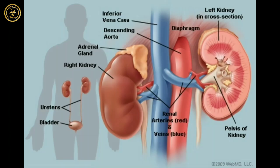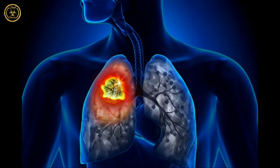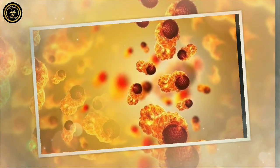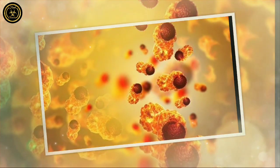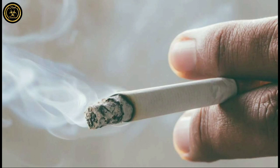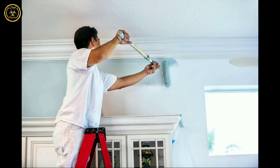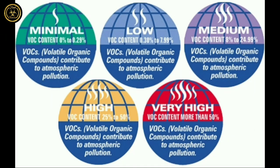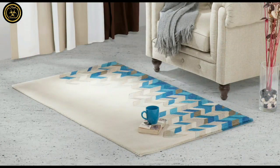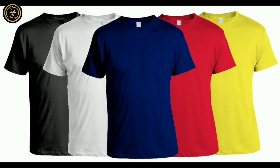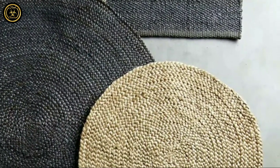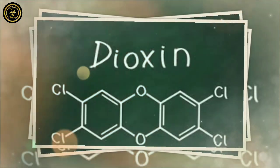VOC exposure can cause kidney failure and liver cancer. They are found in paint, glue, furniture, and wax — classified as low volatile compounds. These chemicals can be present in carpets. We recommend using natural alternatives for these chemical compounds.